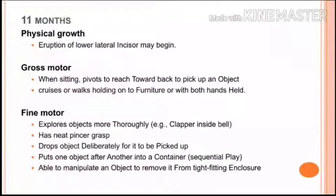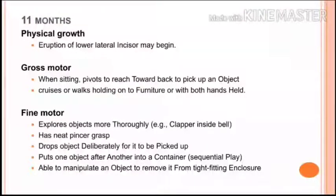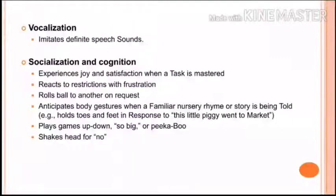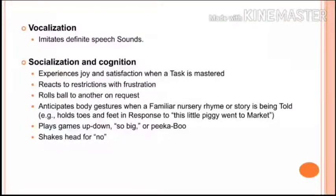For the eleven-month-old child: lower lateral incisors may begin to erupt. In gross motor, when sitting, the baby pivots to reach back and pick up an object. In fine motor, the baby has a neat pincer grasp — holding a pen like an adult — and can manipulate an object to remove it from a tight-fitting enclosure. In vocalization, the baby imitates definite speech sounds. In socialization, the baby reacts to restrictions with frustration, rolls a ball to another on request, and shakes head for 'no.'